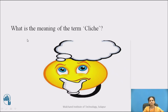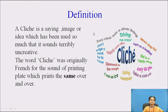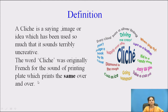Let us discuss what is the meaning of the term glitch. The definition of glitch: a glitch is a saying, image or idea which has been used so much that it sounds terribly uncreative. The word glitch was originally French for the sound of a printing plate which prints the same over and over.